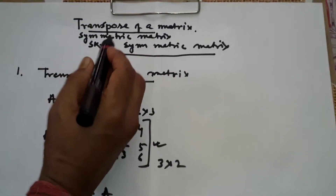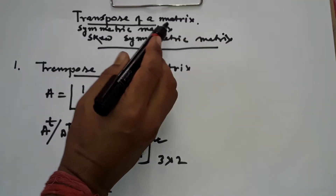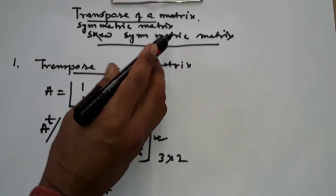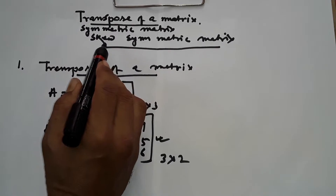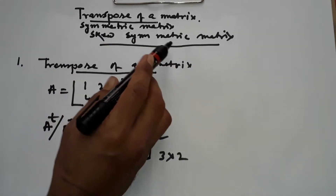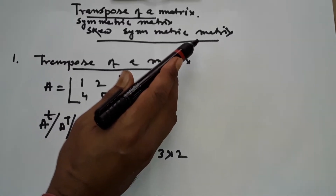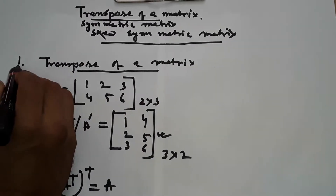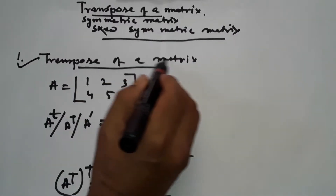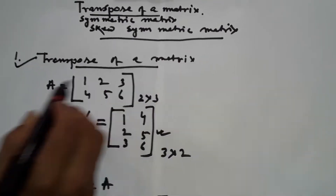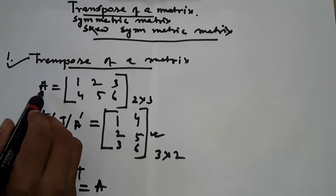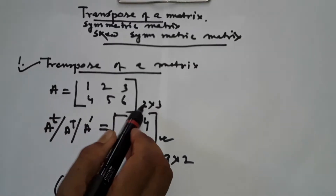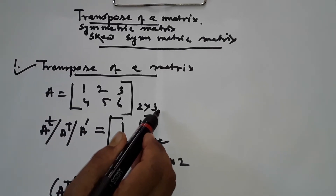Now I will start. Transpose of a matrix — symmetric matrix and skew-symmetric matrix. Transpose of a matrix: let A be a matrix of order 2 into 3.